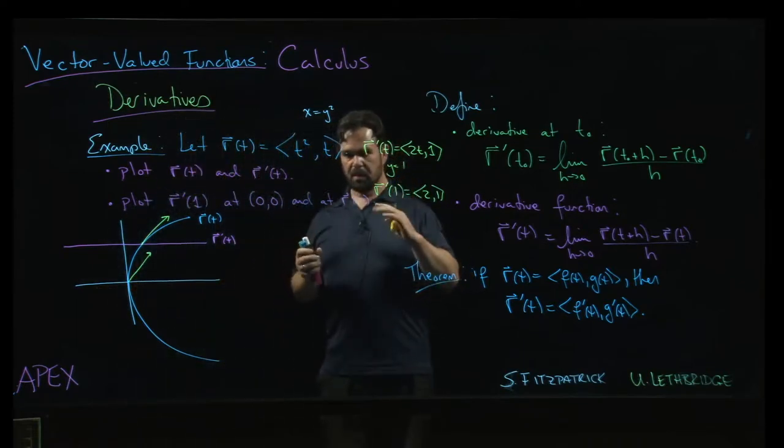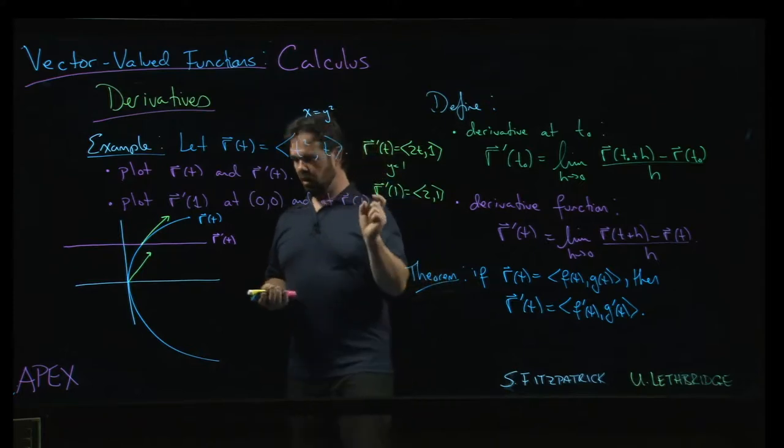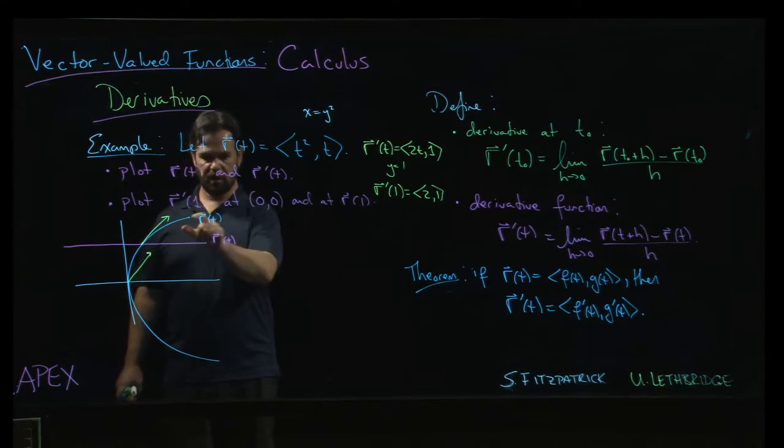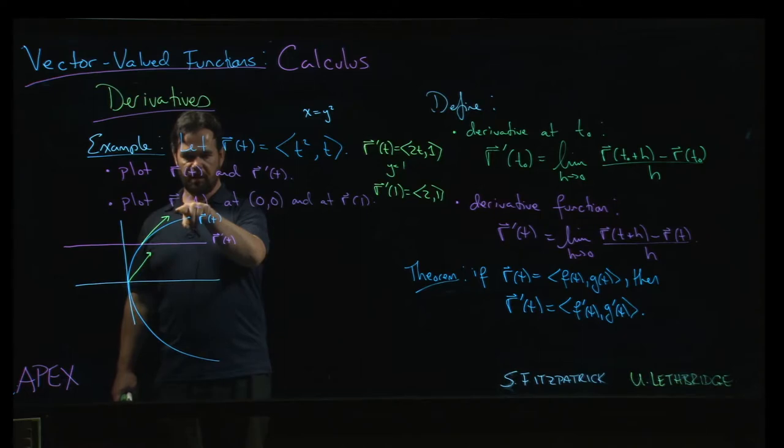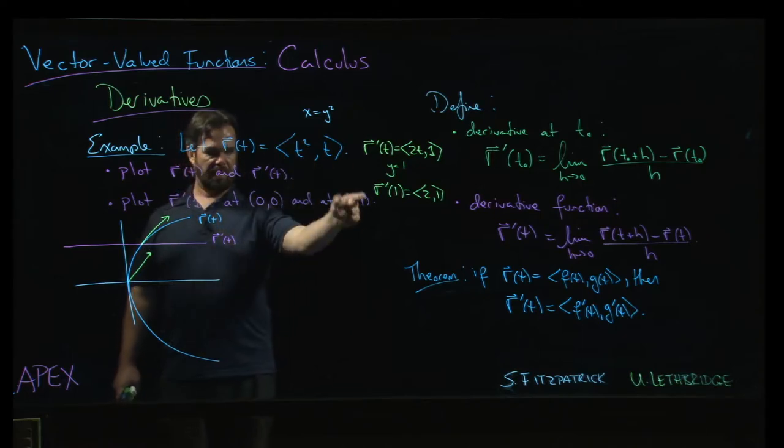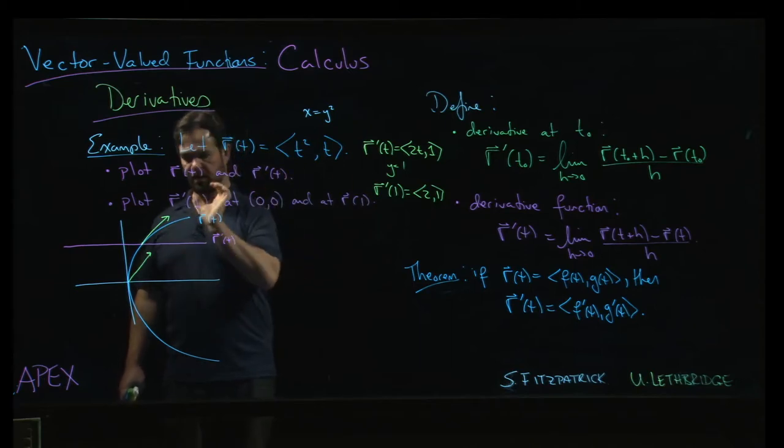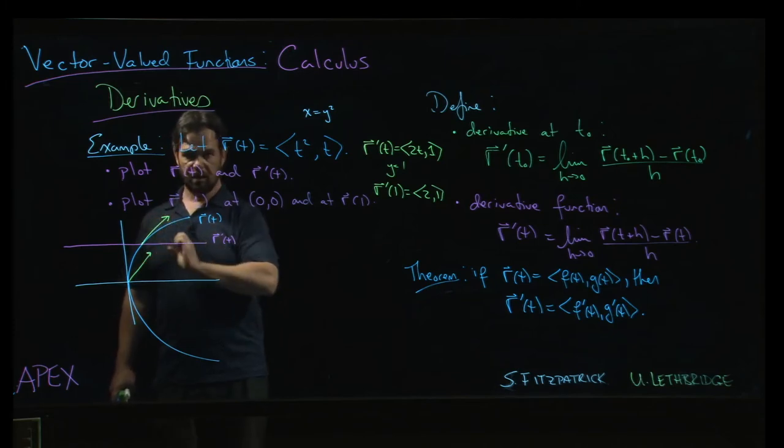And so typically if you're drawing the derivative of a vector-valued function at a particular point like we did there, you are going to draw the tail of that vector at the point on the graph given by that same parameter value for the original function. And then you get that nice tangent vector relationship that we can see in the picture here.